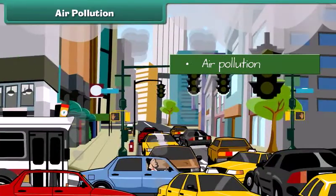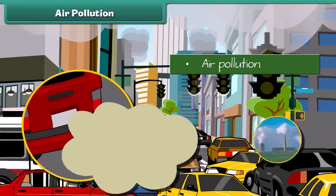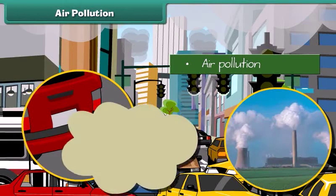Air gets polluted when unwanted substances — air pollutants — enter it. But the question is, how do these substances enter into the air? These air pollutants come due to burning of fuels and emission of poisonous gases from industries.